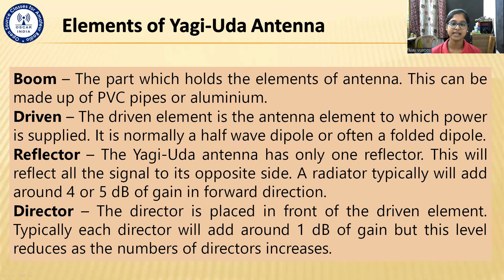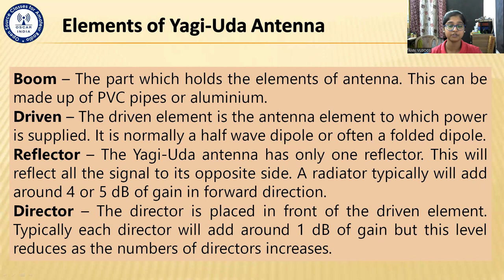The reflector: the Yagi-Uda antenna has only one reflector. It reflects all the signal to the opposite side. A reflector typically adds around 4 to 5 dB of gain in the forward direction. The important thing to remember is that the reflector is a parasitic element, meaning it is not connected to the power supply. The director is placed in front of the driven element. Typically each director adds around 1 dB of gain, but this level reduces as the number of directors increases. The director is also a parasitic element and is always placed at the front. As the number of directors increases, the gain will also increase.